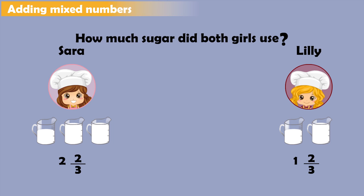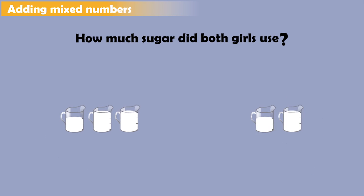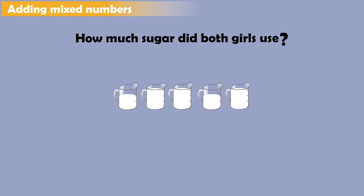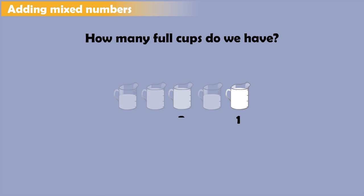We can combine the cups of sugar we have. Let us put them all together and then count them. How many full cups do we have? We have 1 here, 2, and 3 full cups of sugar. Let us put them next to each other here.